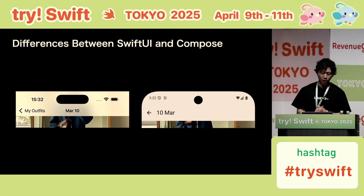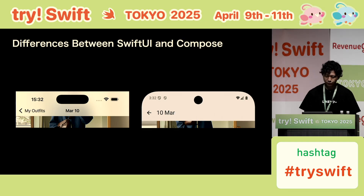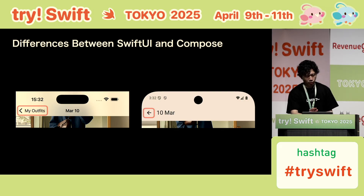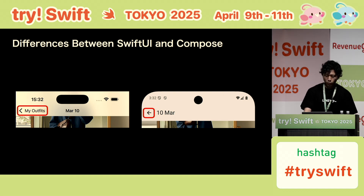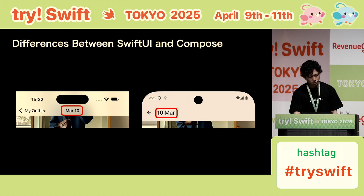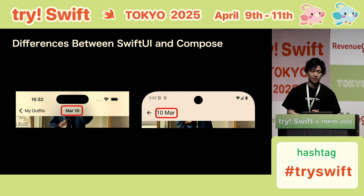It looks nearly identical on both iOS and Android. More than just appearance, it's important to understand the specification differences between SwiftUI and Jetpack Compose. For instance, in the navigation bar, the back button on iOS displays a title, while on Android it doesn't. And the title's position is also different. You should be aware of differences like this.